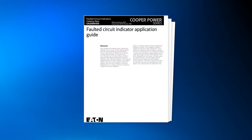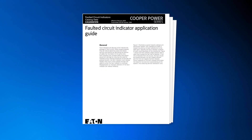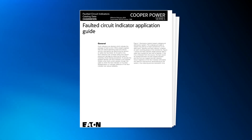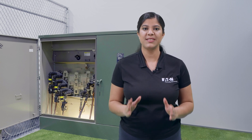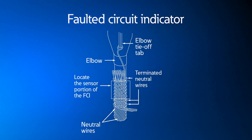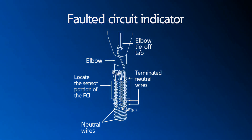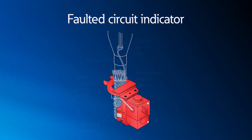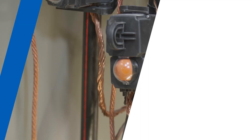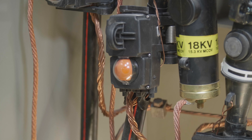Refer to Eaton's Faulted Circuit Indicator Application Guide for more information about FCI applications and installation considerations. In this document, you can read about proper cable preparation for underground systems, which is necessary for FCIs to work reliably. For example, an FCI cannot be installed directly over the concentric neutral of the cable. If the current in the neutral or return path is high, it could cancel the effects of the field from the fault current in the conductor, resulting in the FCI not tripping under fault conditions.